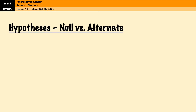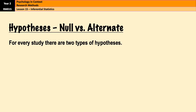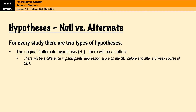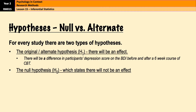Strictly speaking, that isn't going to be the only hypothesis I use, because every study has two types of hypotheses. You have the original or alternate hypothesis, which is H1, which states that there will be an effect. That is the hypothesis as you know it — there will be a difference in participants' depression scores on the BDI before and after a six-week course of CBT.